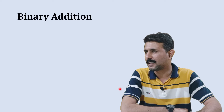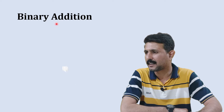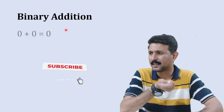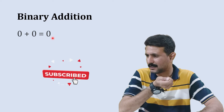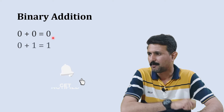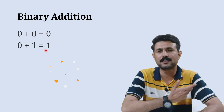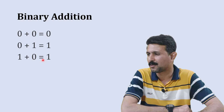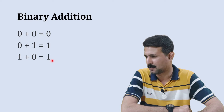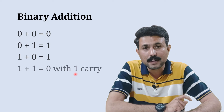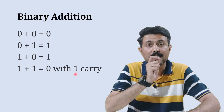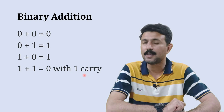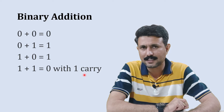The first thing we are going to solve is binary addition. When you add 0 plus 0 it gives us 0. When you add 0 plus 1 the sum is 1. When you add 1 plus 0 the answer is 1. But when you add 1 plus 1, the sum will be 0 and the carry will be 1.